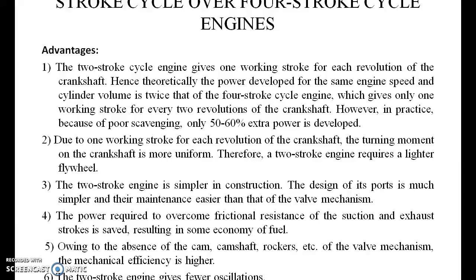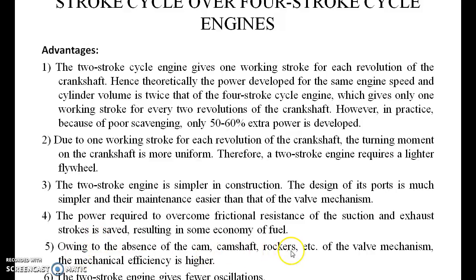Advantages and disadvantages of the two-stroke engine over the four-stroke cycle. The two-stroke cycle engine gives one working stroke for each revolution of the crankshaft, making the turning moment of the crankshaft more uniform. The two-stroke engine is simpler in construction. The power required to overcome frictional resistance of the suction and exhaust strokes is saved. Owing to the absence of cam, crankshaft, and rockers, the mechanical efficiency is high.